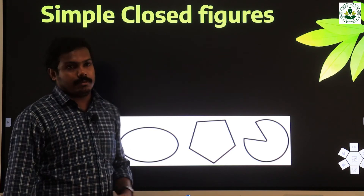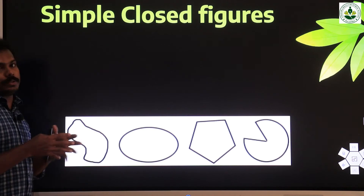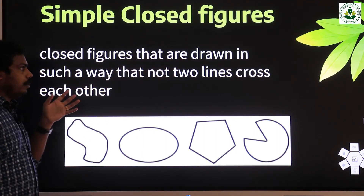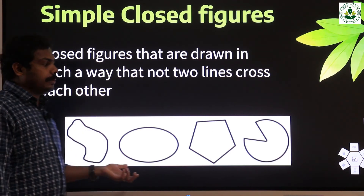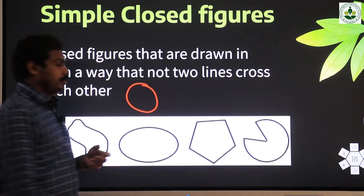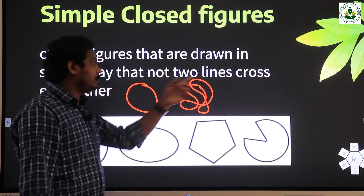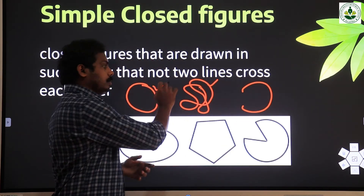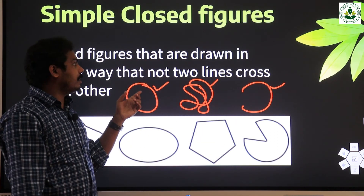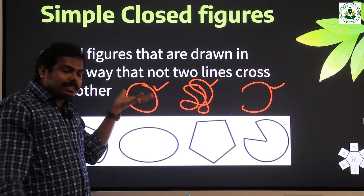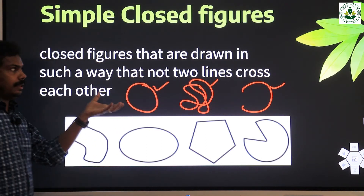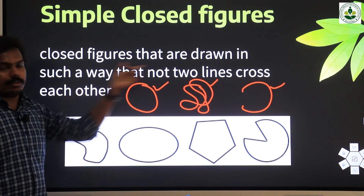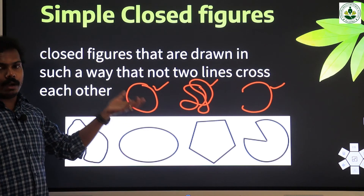And one more type is the simple closed figure. In a closed figure, if there is no crossing between the lines, then it is called a simple closed figure. Closed figures that are drawn in such a way that no two lines cross each other are called simple closed figures. This is a closed figure. This is also a closed figure because the starting point and ending point are the same. Where there is no intersection, it is a simple closed figure.